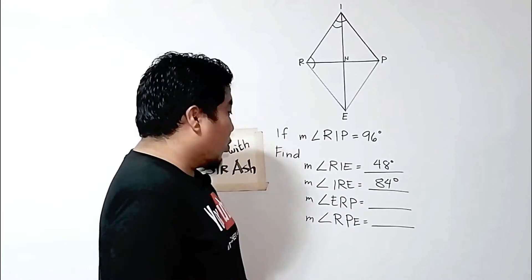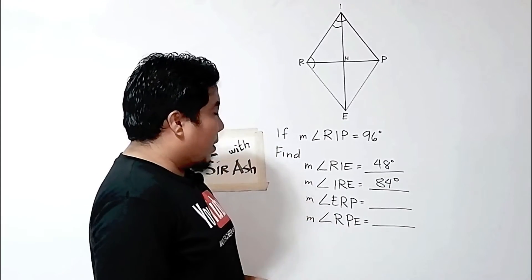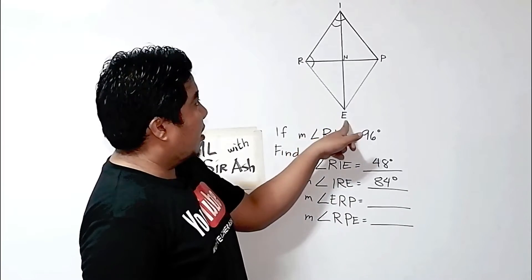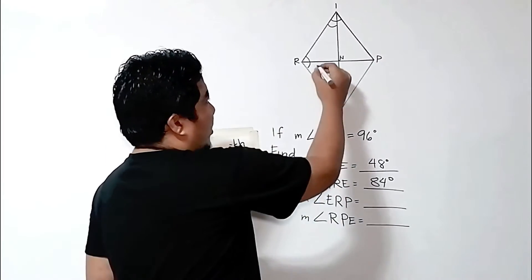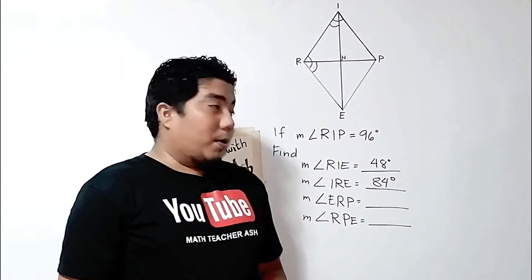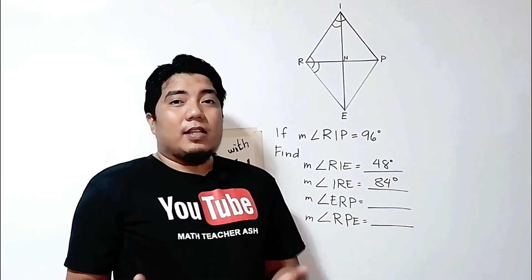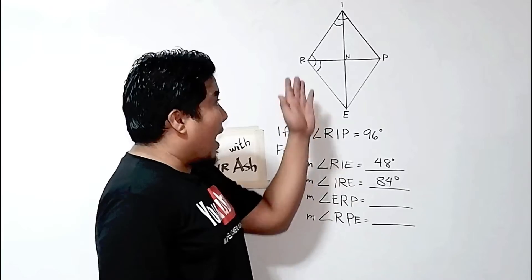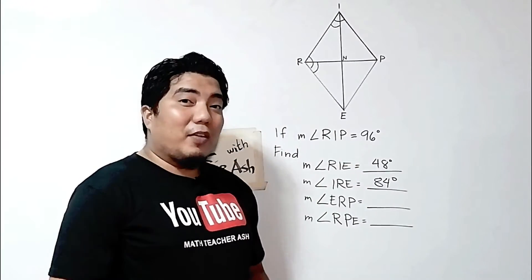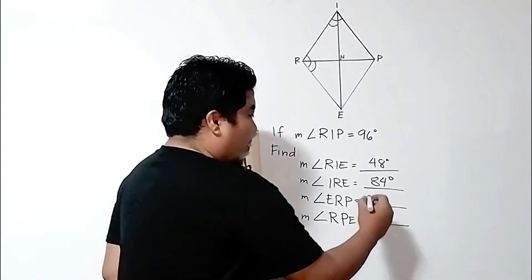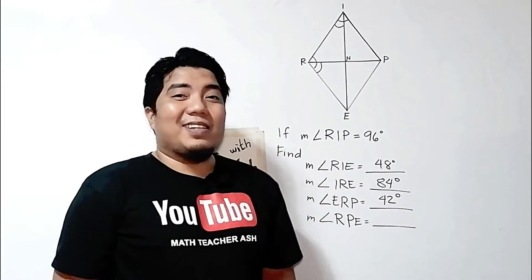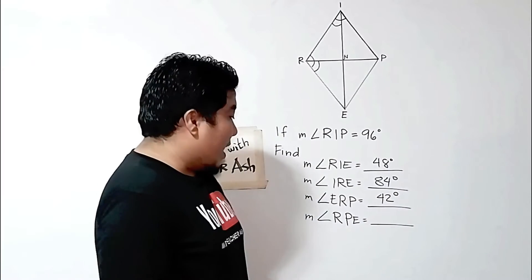Now let us go to the third question: what is the measurement of angle ERP? Same as the first problem with RIE, this is also half of angle IRE. So half of 84 is, of course, 42 degrees.